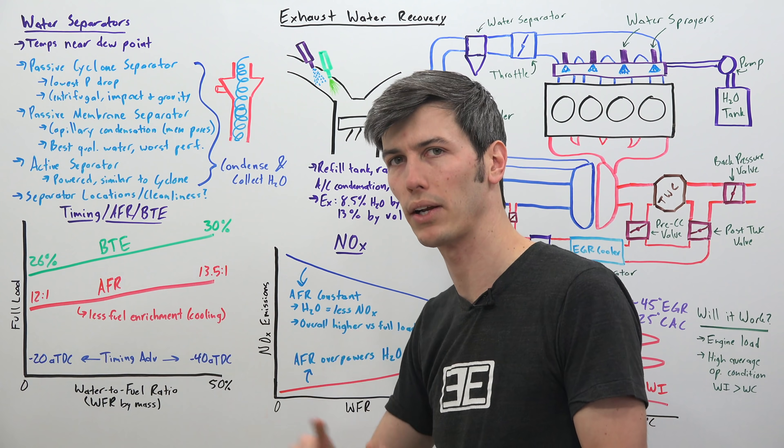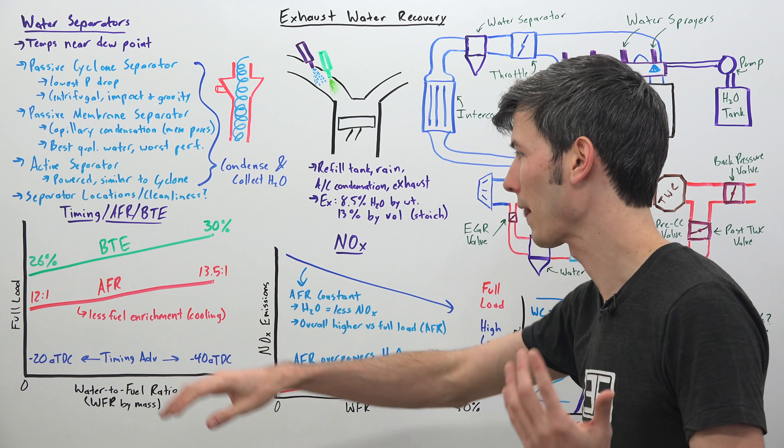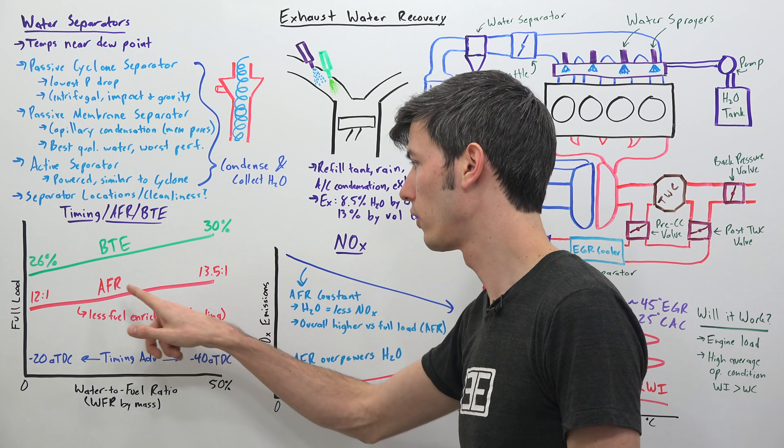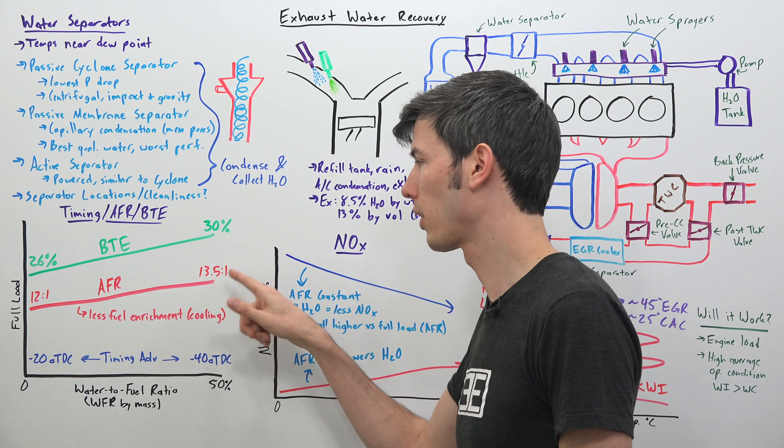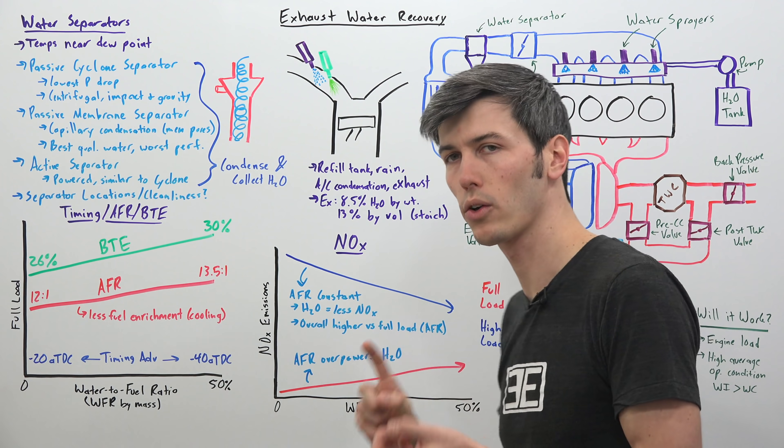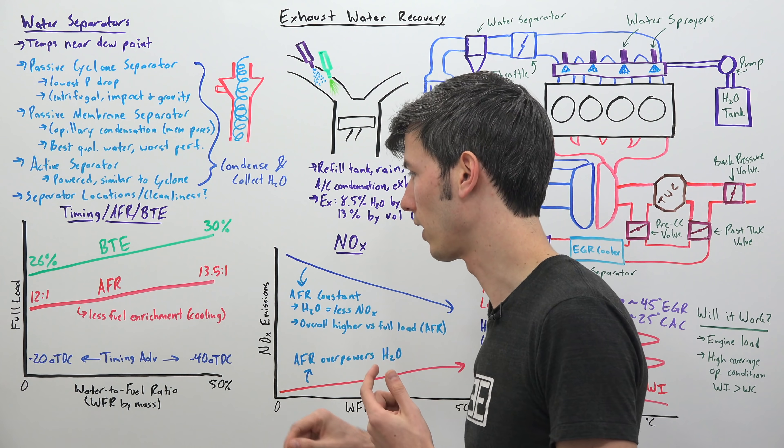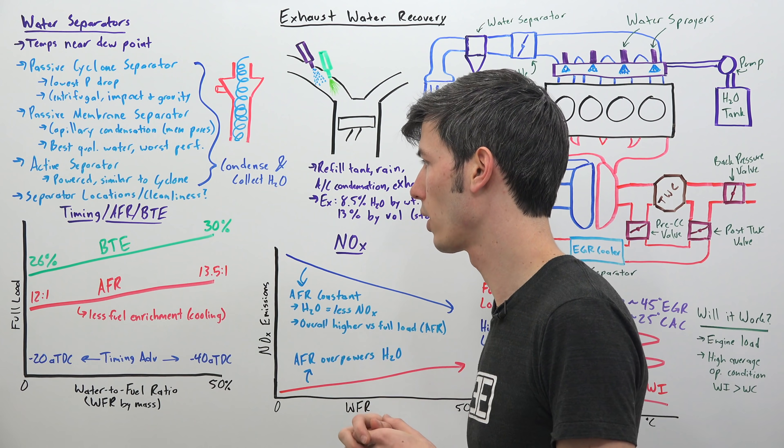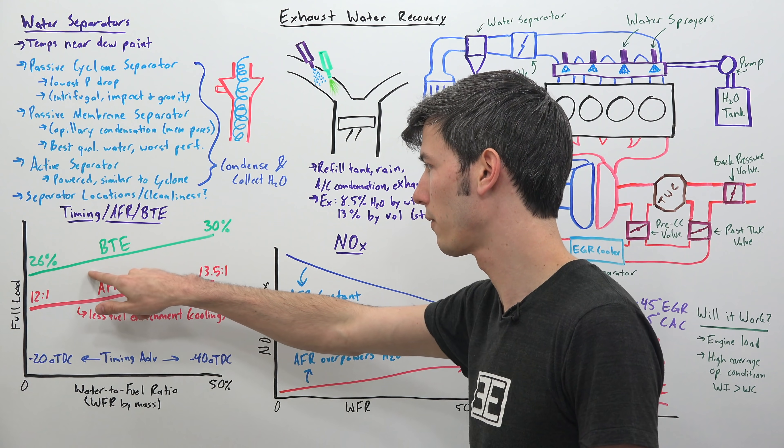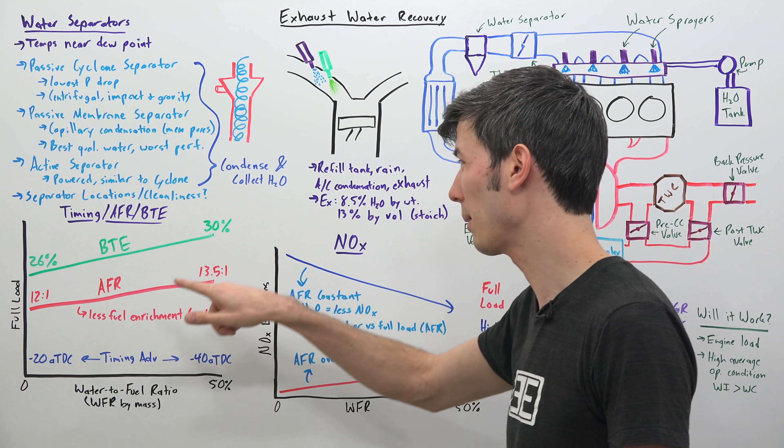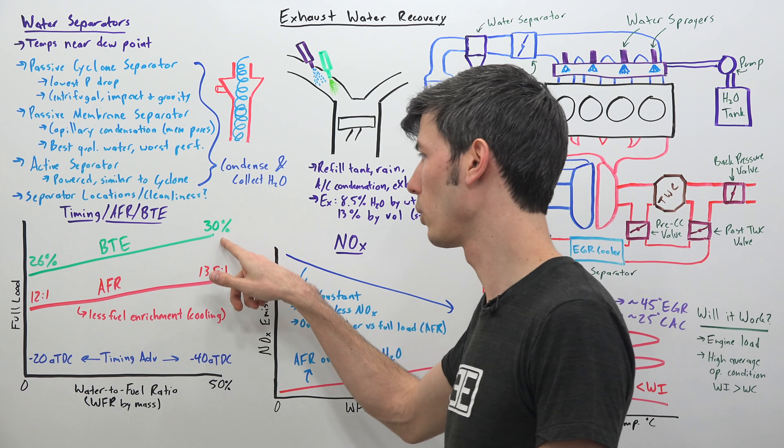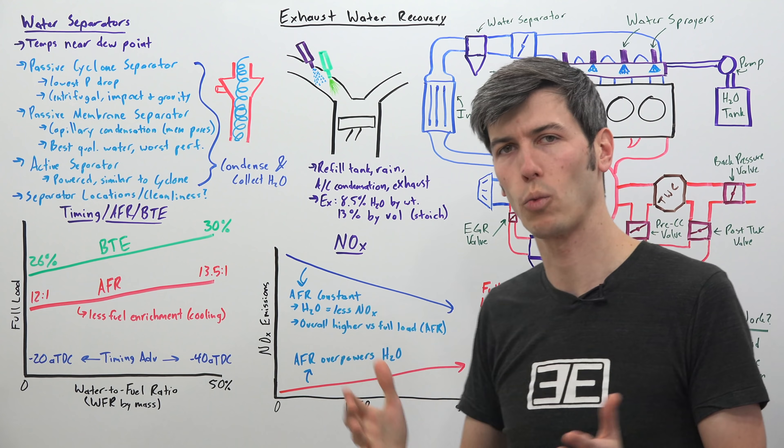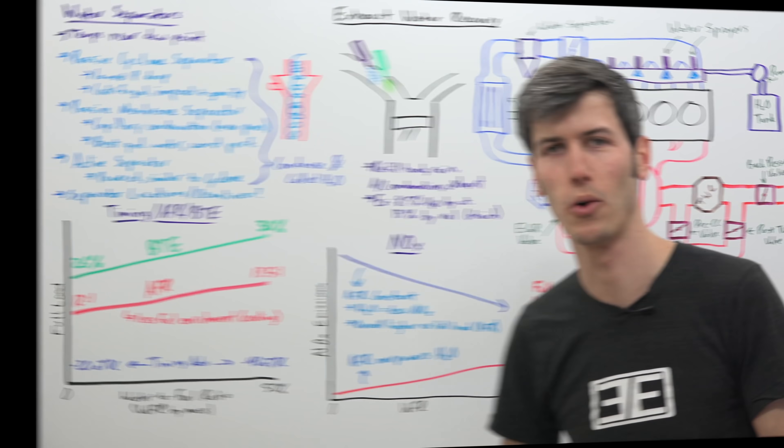So you raise that air fuel ratio up to thirteen point five to one. The result is you increase your brake thermal efficiency. So by advancing the timing and by increasing your air fuel ratio you're able to improve that thermal efficiency from twenty six percent up four full percentage points to thirty percent. Meaning about fifteen percent more efficient by using this water injection system. Super cool.